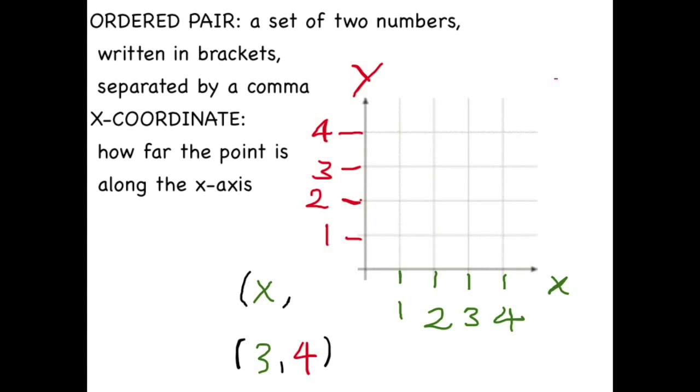The first number of the ordered pair is the X coordinate. It represents how far the point is along the X axis. In this example, the X coordinate is 3. So, we start at the origin, and we count three lines along the X axis, which as we know is the horizontal axis: 1, 2, 3.